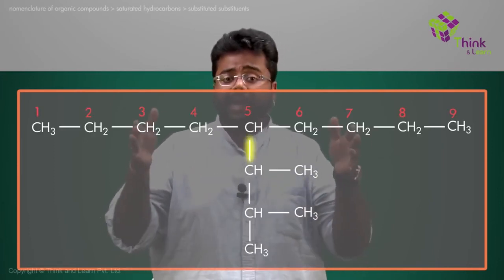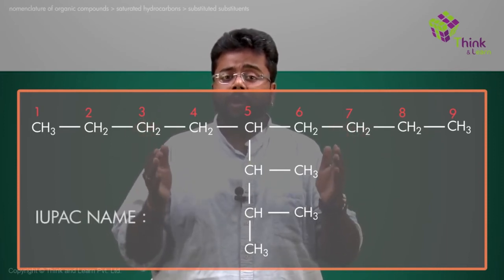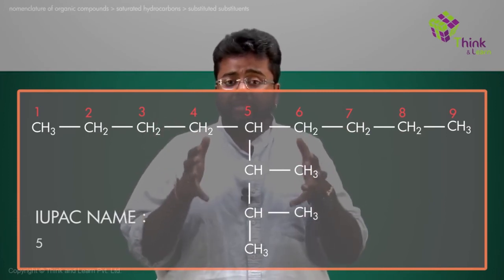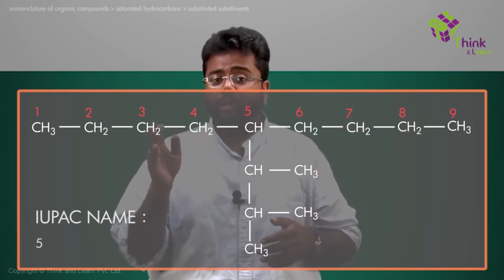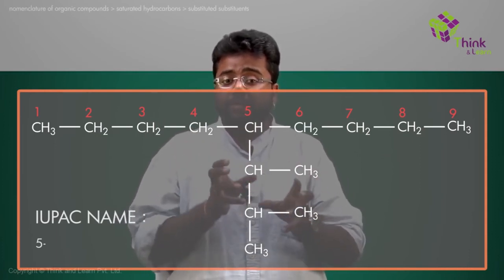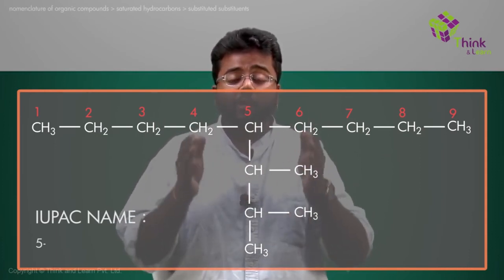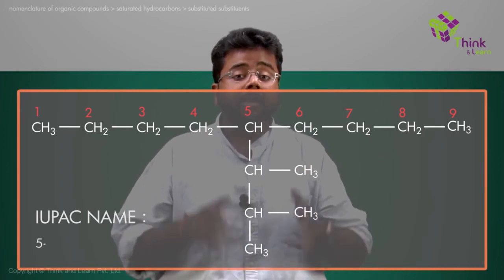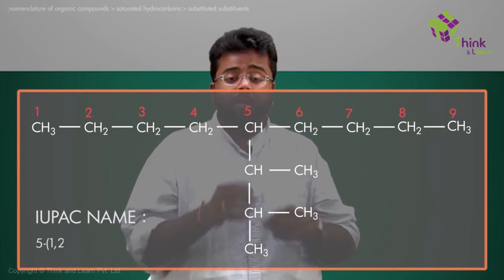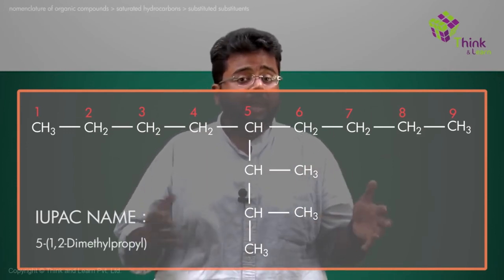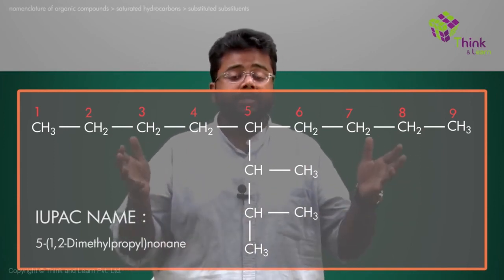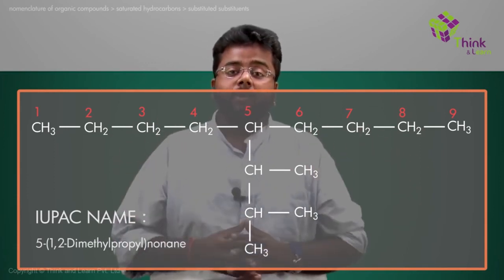Bringing it back and connecting it to the parent chain, the name would become 5 — because this entire substitution is at the fifth position — so 5-hyphen, and this substituted substituent has to be enclosed in a bracket. So this would become 5-(1,2-dimethylpropyl), and the 9-carbon chain with single bonds becomes nonane. So yes, this would be the name of the compound.